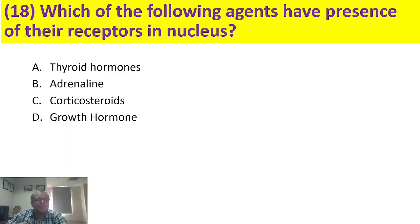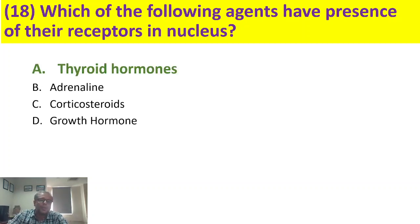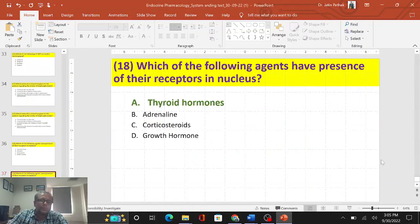Which of the following agents have receptors present in the nucleus? Adrenaline and growth hormone have receptors at the cell membrane level. Corticosteroids have receptors at the cytoplasm level. Thyroid hormones have their receptors at the nucleus. So the answer is A, thyroid hormone. This concludes the MCQ answers for endocrine pharmacology. In the next class we will meet with some other topic. Thank you very much.